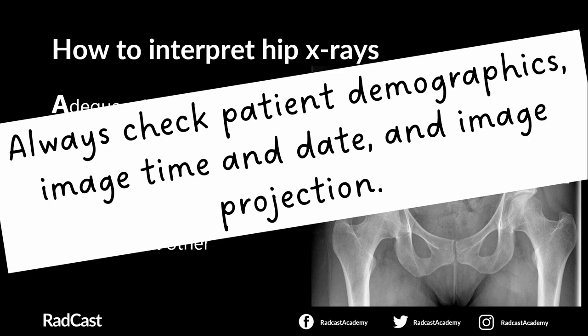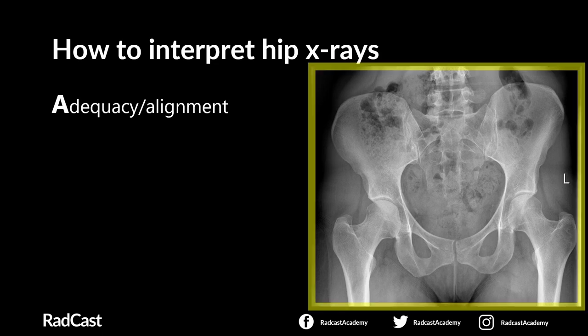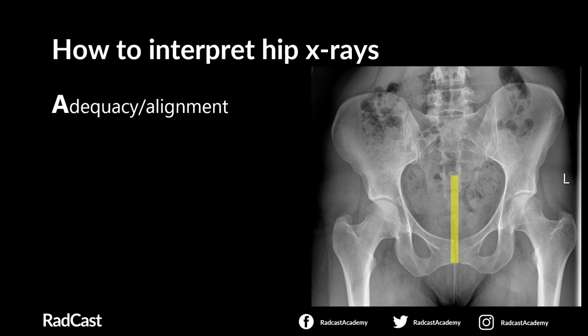First is adequacy and alignment, which is a quick assessment of the image quality. An adequate image means we can see the entire pelvis from the top of the iliac crests down to the femoral shafts. And a well-aligned image will have the coccyx and the pubic symphysis both in the midline.